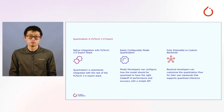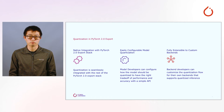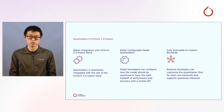Now I'll introduce our plans for quantization in the PyTorch 2.0 export path. The main advantage is that it relies on Torch Dynamo for program capture, which is expected to have higher model coverage compared to fx symbolic tracing. For example, it supports control flows.